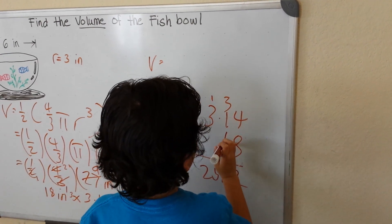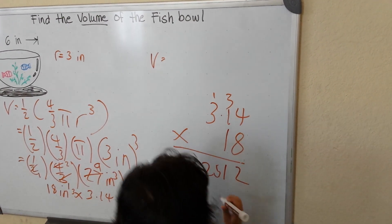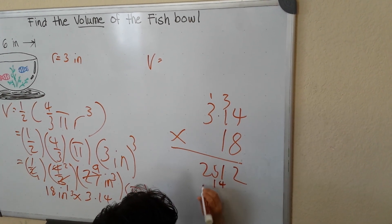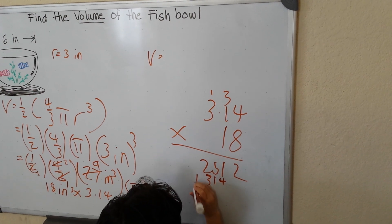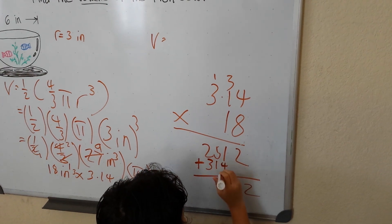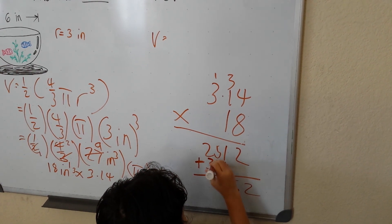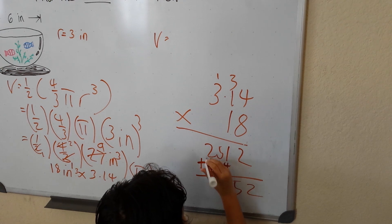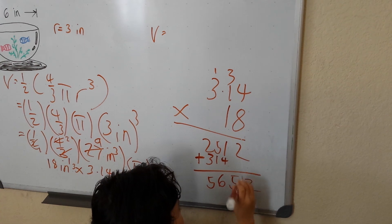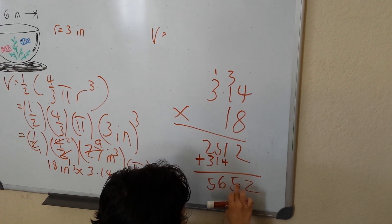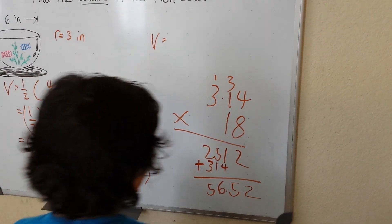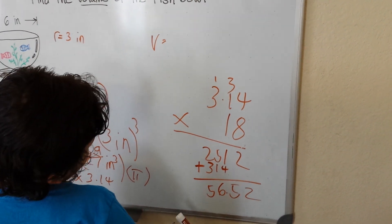Then 1 times 4 is 4, 1 times 1 equals 1, 1 times 3 is 3. So we add them up: 1 plus 4 is 5, 5 plus 1 is 6, 2 plus 3 is 5. So we get 56.52.